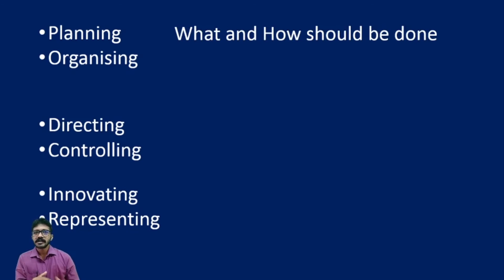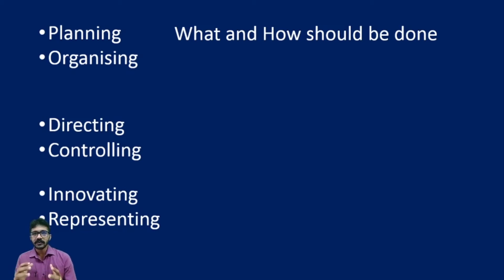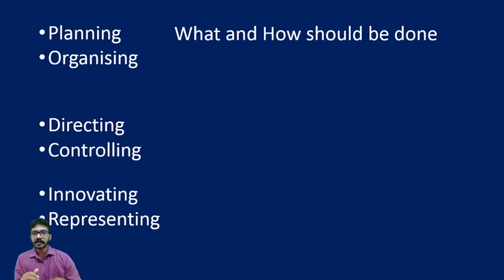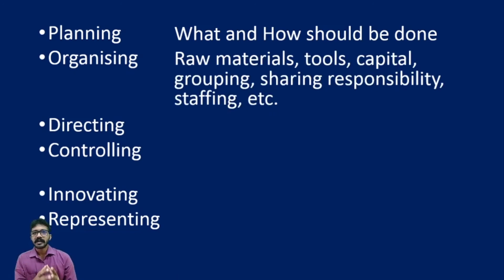The first function is planning. Planning means deciding what and how things should be done. First we need to know what is to be done, then decide whether it is possible or not, and then form a strategy on how exactly it is to be done. This step is called planning.